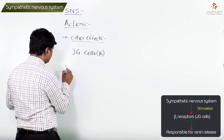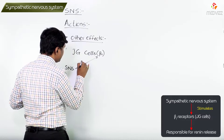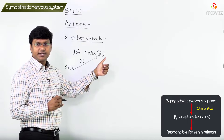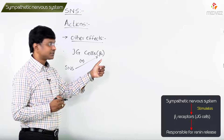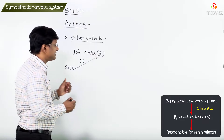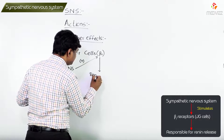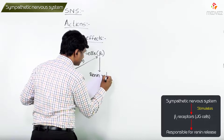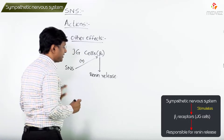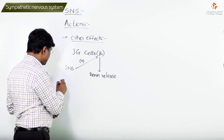So, if the sympathetic nervous system stimulates the beta-1 receptors present in the JG cells, this stimulation is responsible for renin release. That is one thing.